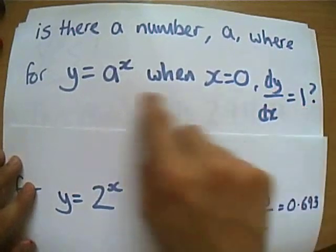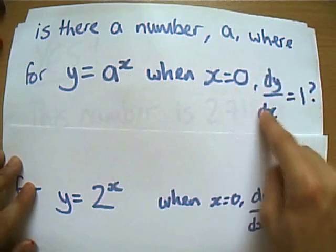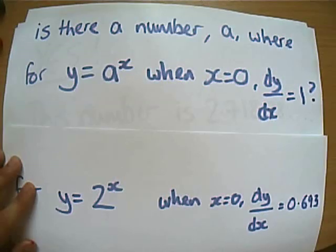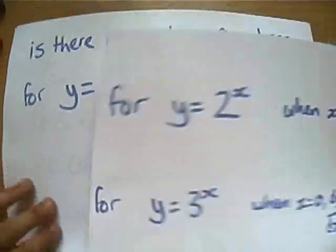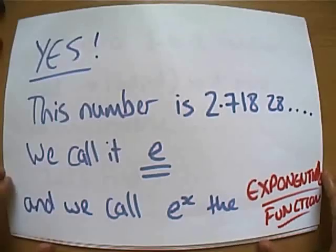There must be some number, that when you do that number to the power of x, and you look at the gradient where it crosses the y-axis, you end up with a gradient of 1. So they went away, did a bit of jiggery-pokery, and yay, yes, this number did exist.